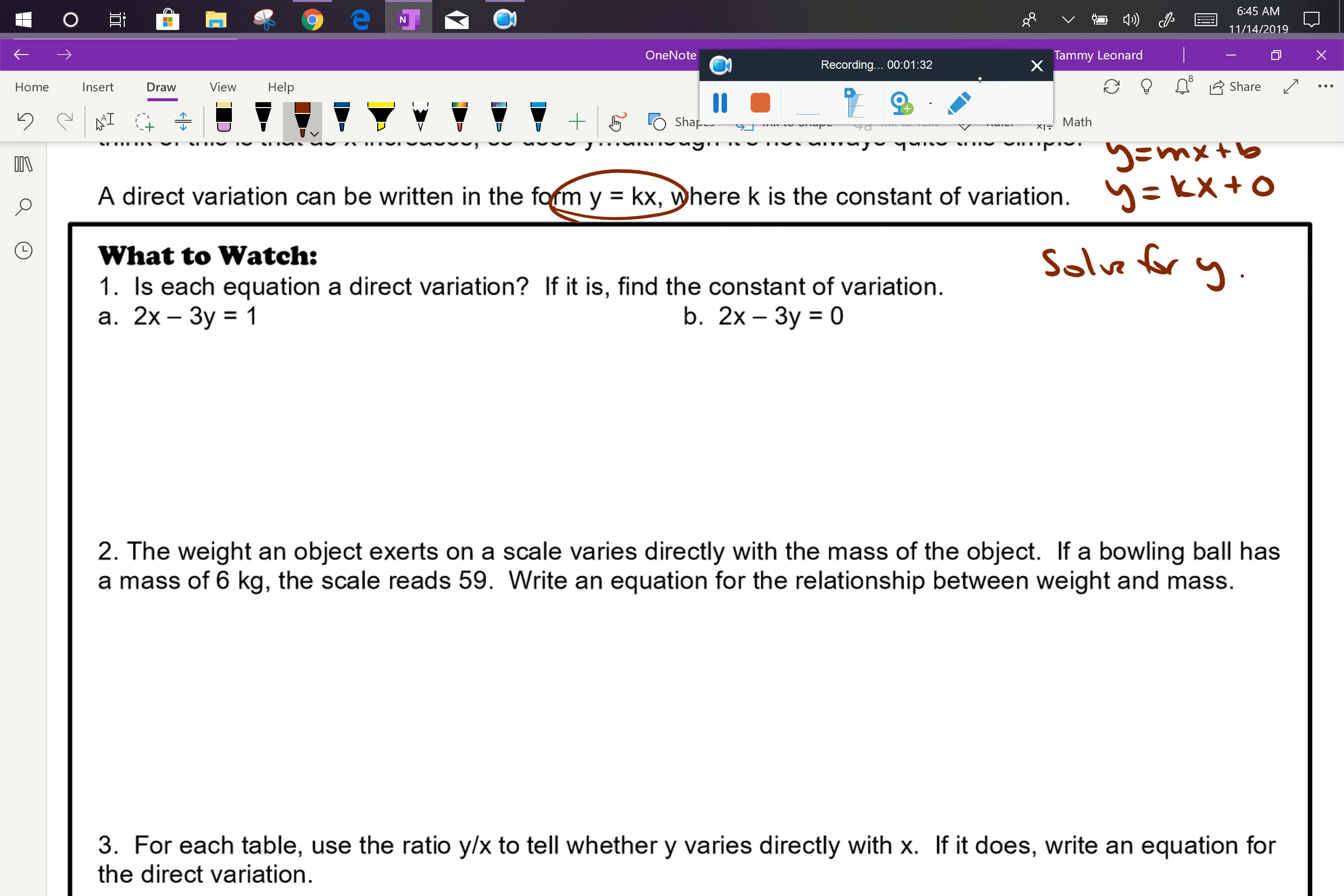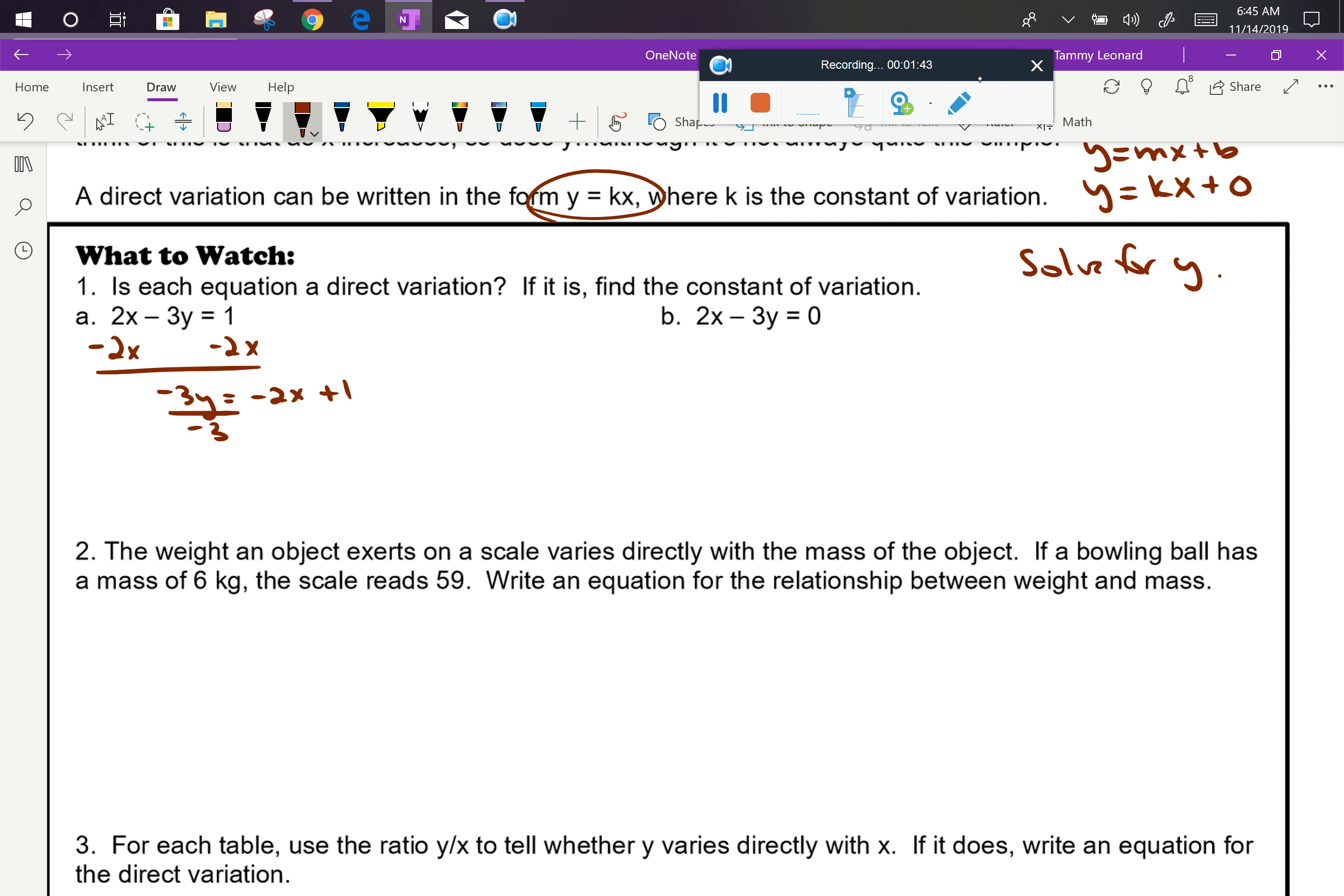So if I have 2x minus 3y equals 1, I would start by subtracting 2x from each side. And I have negative 3y equals negative 2x plus 1. If we divide both sides by negative 3, we have y equals 2 thirds x minus 1 third. Because remember that 3 divides both terms.